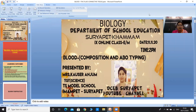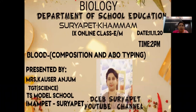Good afternoon all. Welcome back to DCEB Suryapet Kammam Bioscience online class. I am Kausar Anjum, working as TGT Science in TS Model School, Imampet Village, Suryapet Mandal and District. Today I am going to explain you about blood, its composition and ABO typing. In this topic we will learn what is blood, what composition it has, what are the functions of blood cells, how many types of blood groups are there, and how we can confirm a person's blood group.